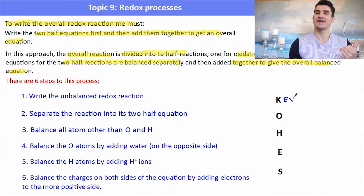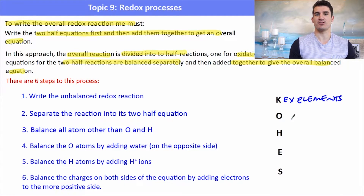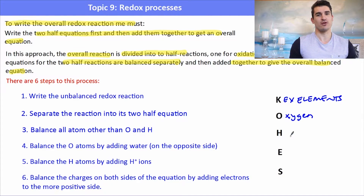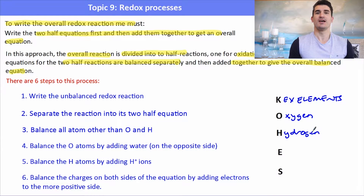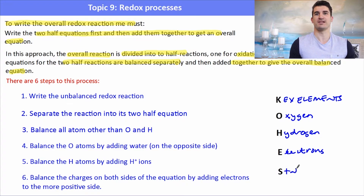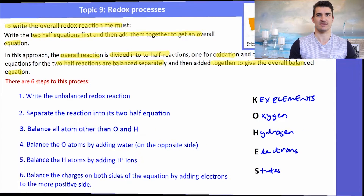I have a little saying for this. First, we balance the key elements — that's everything other than oxygen and hydrogen. Then we balance for oxygen by adding water, and we balance for hydrogen by adding H+. Then we balance for electrons by adding electrons to the most positive side. Finally, we balance the states. This is called the COHES method: C-O-H-E-S.